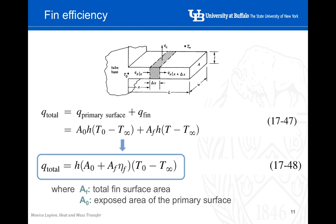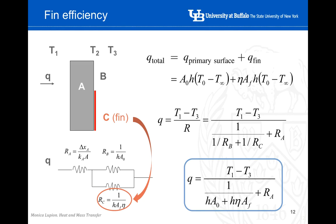When analyzing heat transfer over a fin and defining fin efficiency, the general equation can be used to determine the total heat rate when fin elements are present. This is an example of applying the electrical circuit analogy to determine heat rate based on delta T and the different thermal resistances.